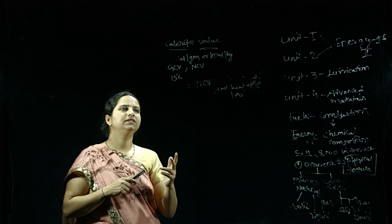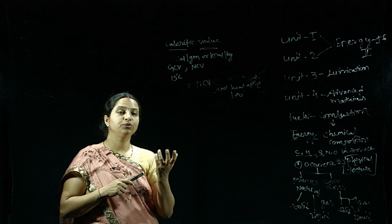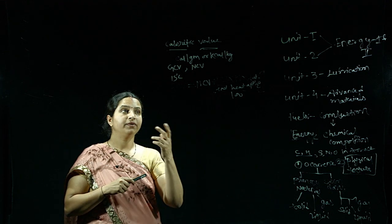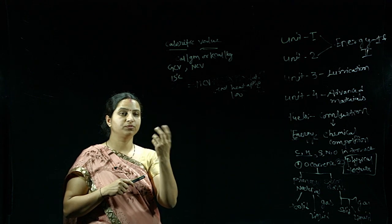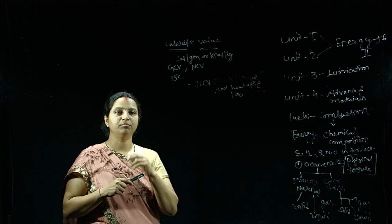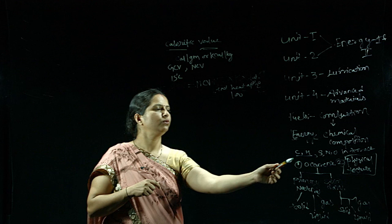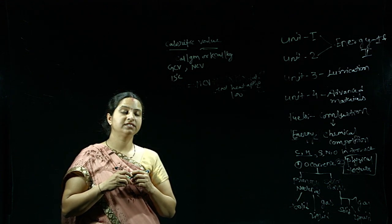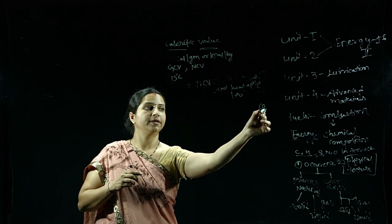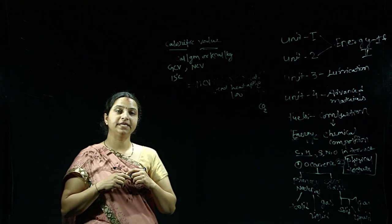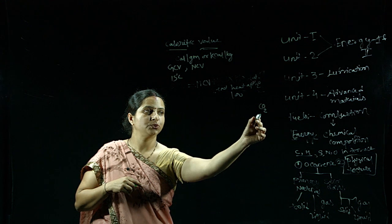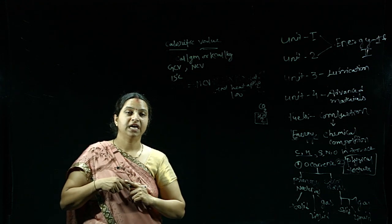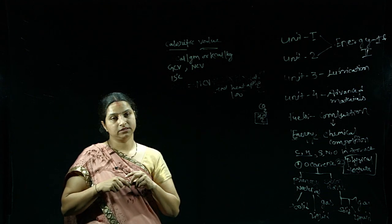GCV is also known as higher calorific value because it is the sum of NCV plus the heat generated by the condensation of water molecules. These water molecules come from the combustion reaction of fuel — fuel contains carbon and hydrogen. When carbon burns, it releases energy plus CO₂. When hydrogen burns, it liberates energy along with H₂O in the form of vapour or steam.